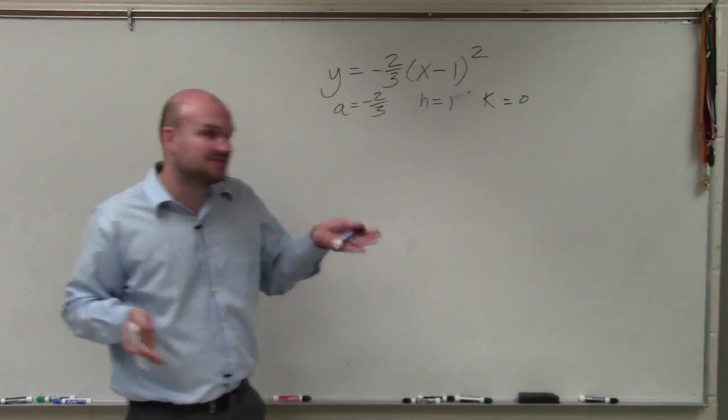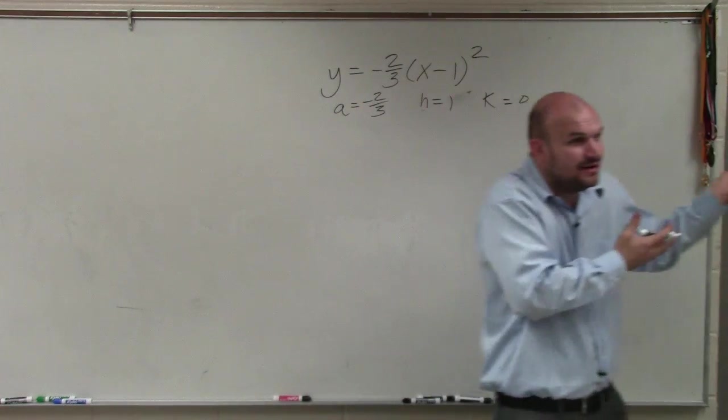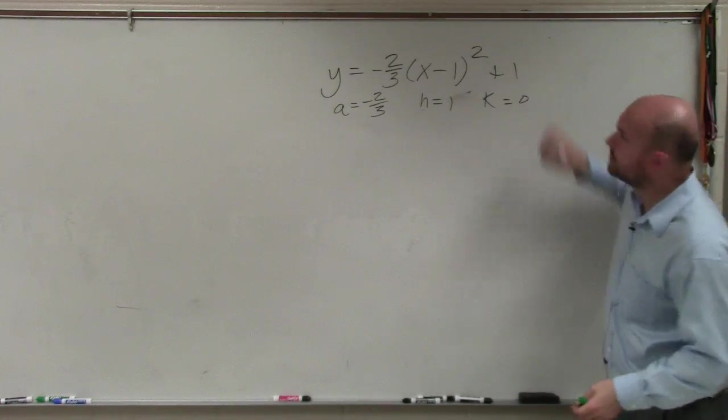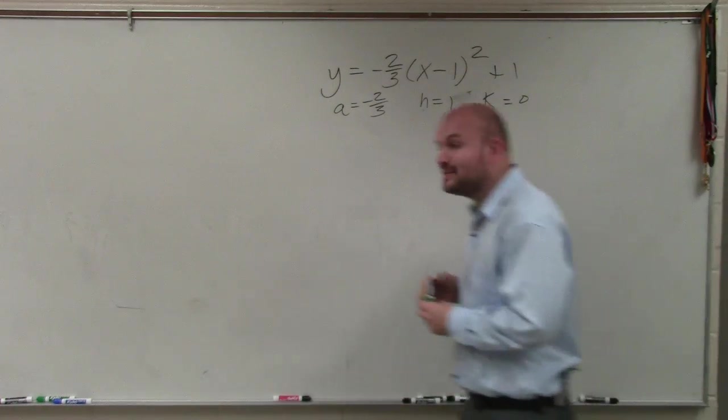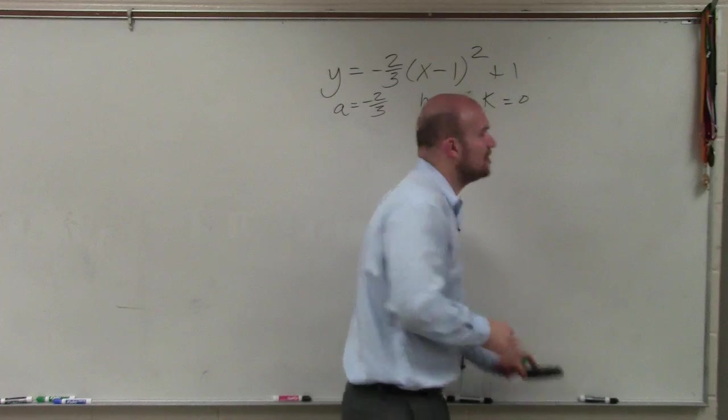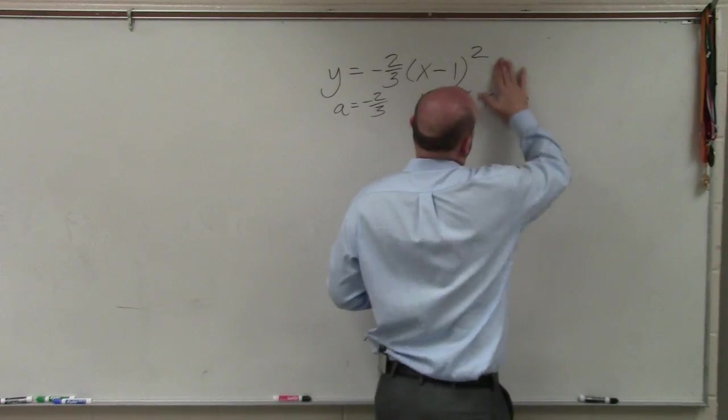But I think it's very helpful to make sure you guys understand: there's no k here. So k doesn't equal 1. If k equals 1, it would look like that. There's no k, so it has to be 0.